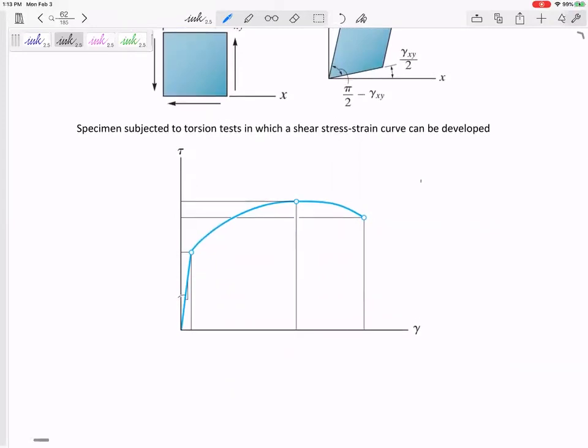All right. So let's look at shear and we've mentioned this, but the slope of the shear diagram is not E, it is G. All right. And the E and the G will be different. All right. So you can't just use E.